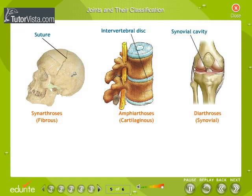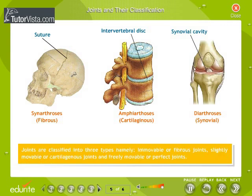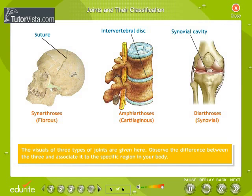A joint is the meeting place of two bones. Joints are essential for all types of movements involving the bony parts of the body and act as levers to bring about specific types of movements. Joints are classified into three types: immovable or fibrous joints, slightly movable or cartilaginous joints, and freely movable or synovial joints. Observe the visuals of the three types of joints and associate each to a specific region in your body.